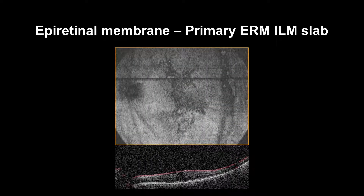The ILM slab may not show any changes, or will show straight or curved hyporeflective folds. However, in more advanced stages where the epiretinal membrane is thicker and causing more distortion, the ILM slab will show more folds in the form of hyporeflective lines covering a larger surface area. Some cases can show a window to the retina due to segmentation artifact.